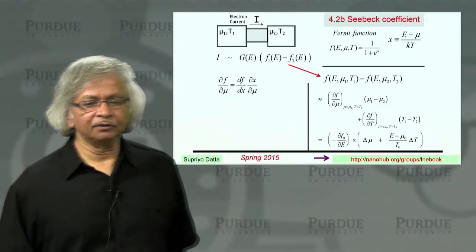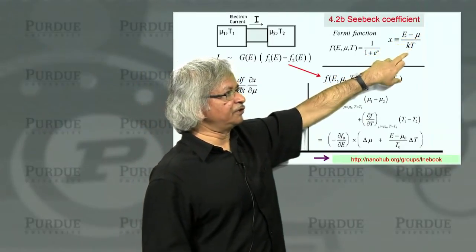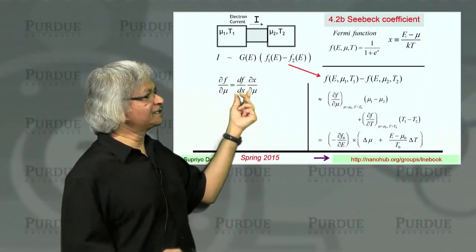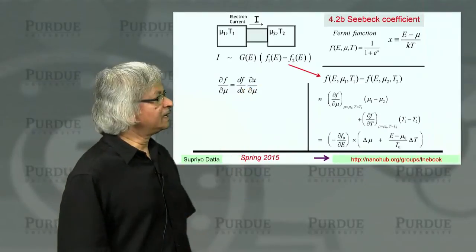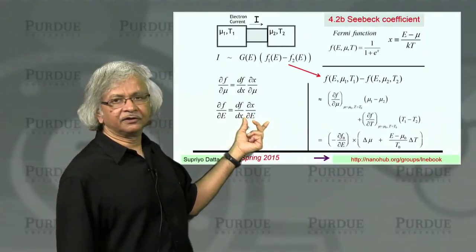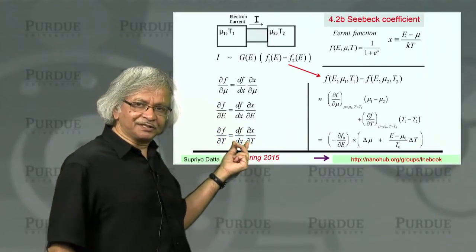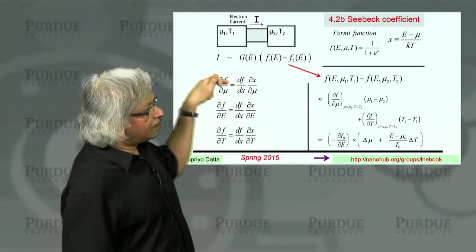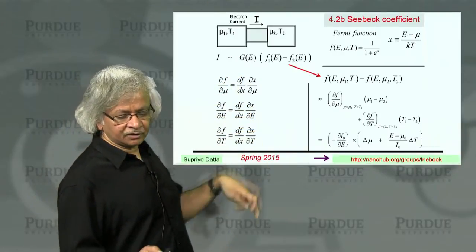So let me explain how you show that dF dT, the derivative with respect to temperature, is related to the derivative with respect to energy. For that, what you note is F is a function of this X, and X is E minus mu over kT. So when I'm writing derivative with respect to mu, you do this chain rule. You first take the derivative with respect to X, and then multiply by the derivative of X with respect to mu. Similarly, if you want derivative with respect to energy, you first do dF dx, and then take the derivative of X with respect to energy.